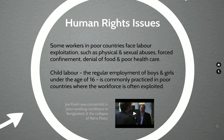Joe Fresh was connected with the poor working conditions at Rana Plaza — a huge multi-level factory where people were working in close quarters — and eventually it collapsed and hundreds were killed.